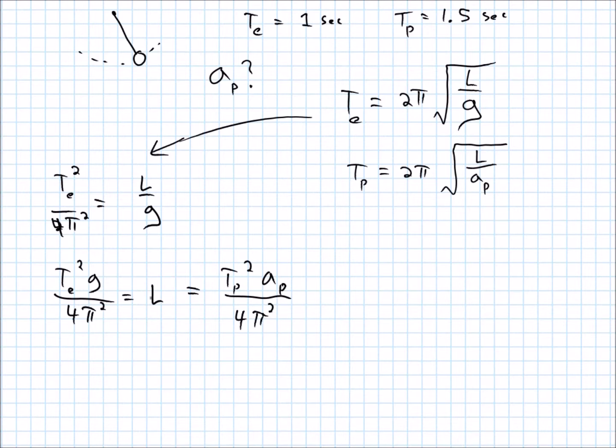So, we don't really need to look at that L in the middle. I can multiply both of the extreme sides here by 4 pi squared to get rid of that. And I'm looking for the acceleration due to gravity on the planet, so if I divide over the period on the planet, I get...